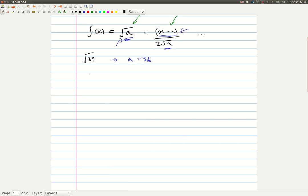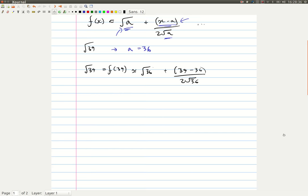So the square root of 39 equals f of 39, which is approximately equal to the square root of 36 plus 39 minus 36 over 2 root 36.